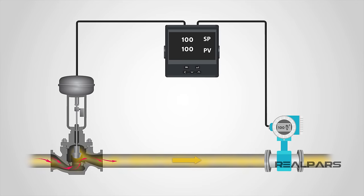To sum it all up, we, as control engineers, need to control processes, and in order to do that, we use devices available to us in order to facilitate that function. The standalone and integrated PID controller is the most widely used device for that purpose. In our next video, we will get into the nitty-gritty of how to adjust the parameters of our controller. This is often referred to as tuning the loop.